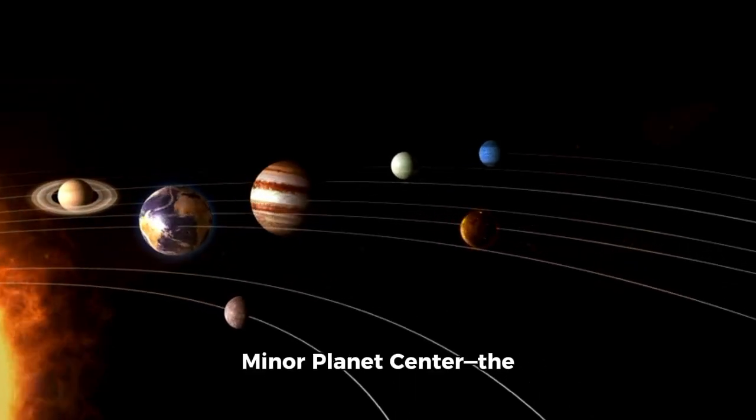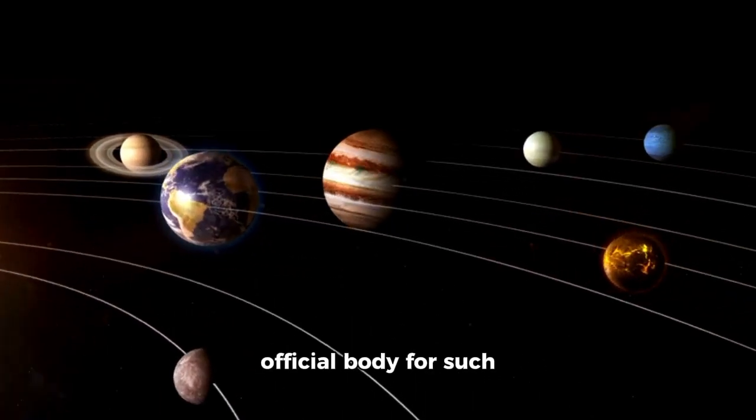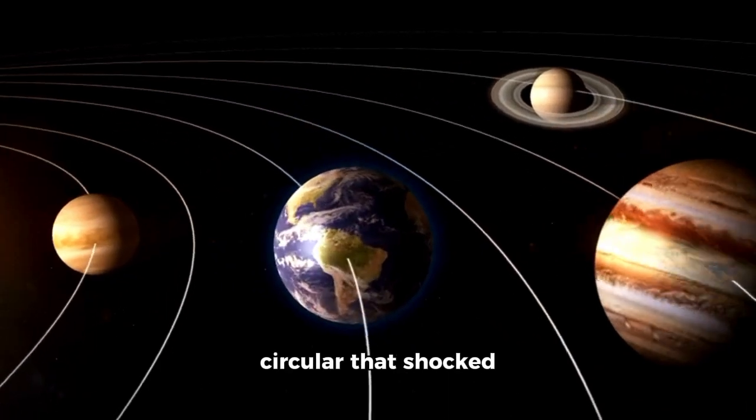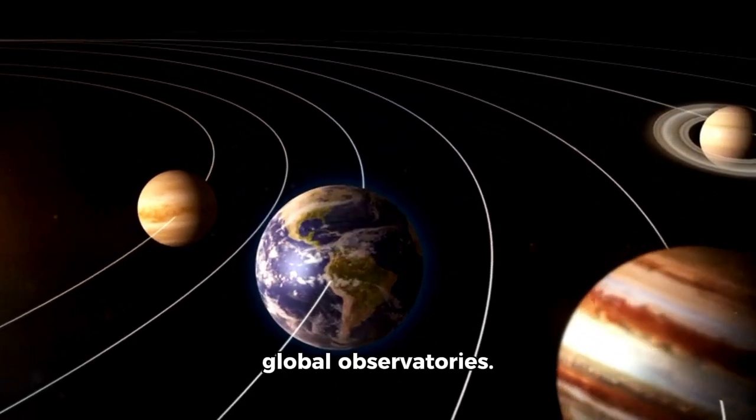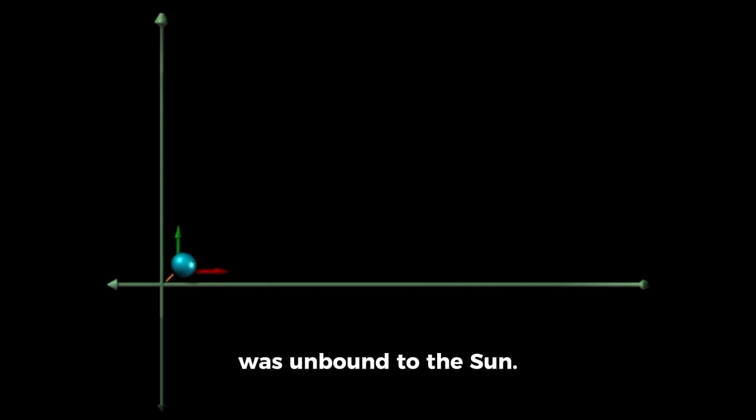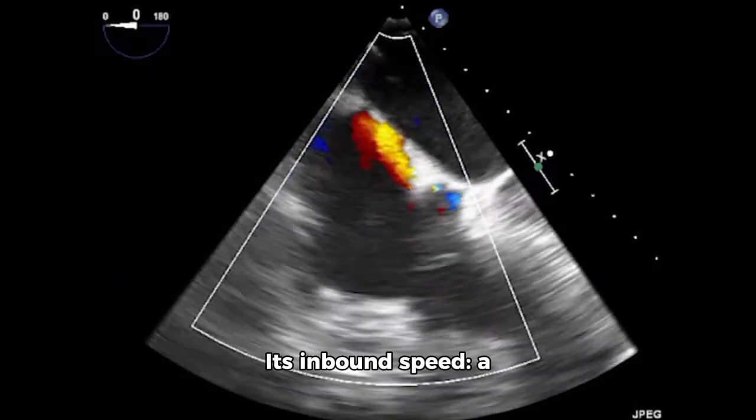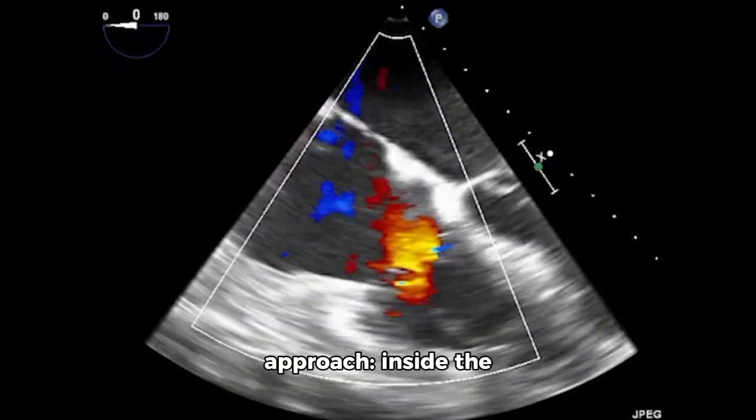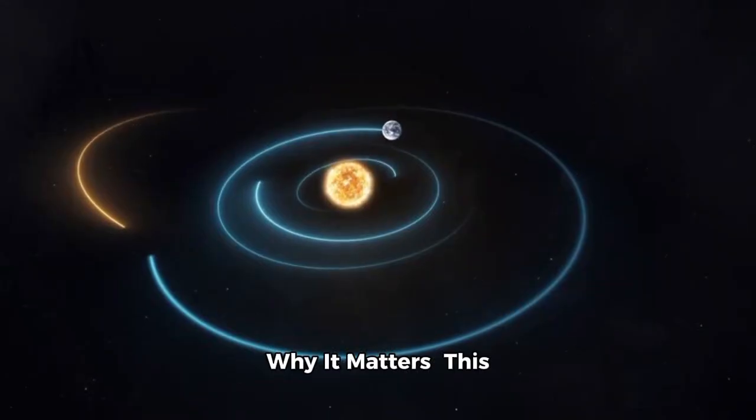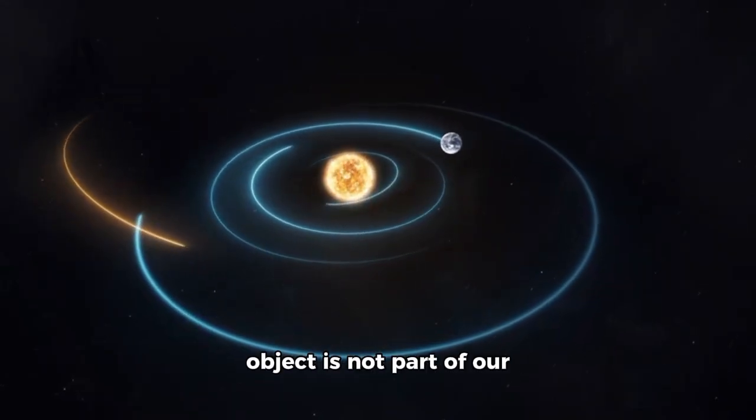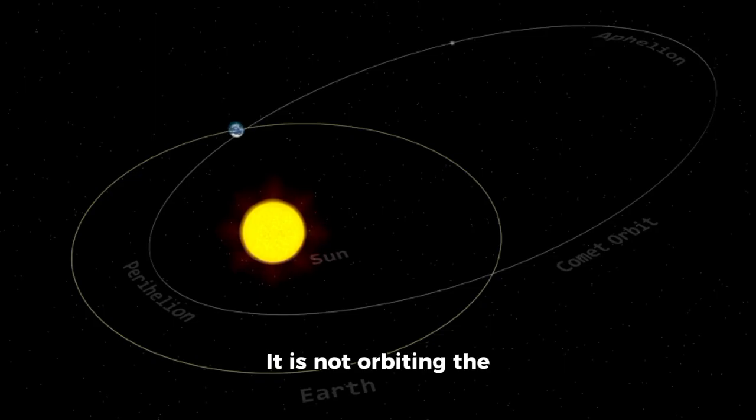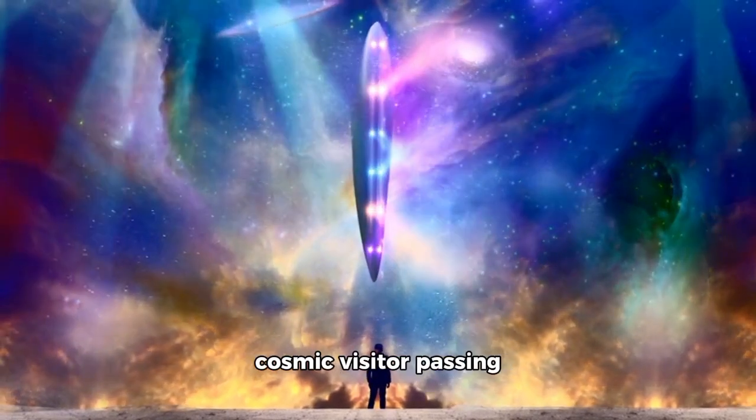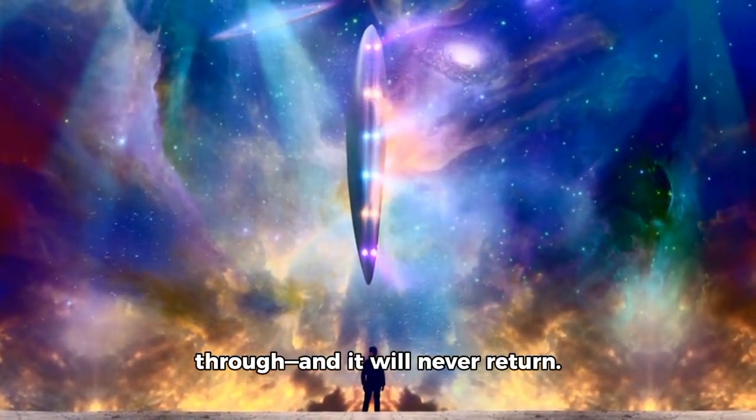Within 24 hours, the Minor Planets Center, the official body for such announcements, issued a circular that shocked global observatories. The object's trajectory was unbound to the sun. Its inbound speed: a staggering 58 kilometers per second. Its closest approach: inside the orbit of Venus. This object is not part of our solar system's family. It's on a one-way trip, a cosmic visitor passing through, and it will never return.